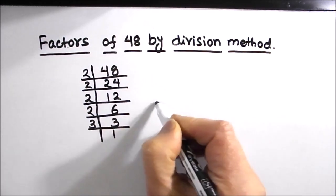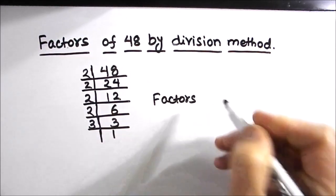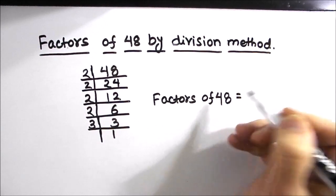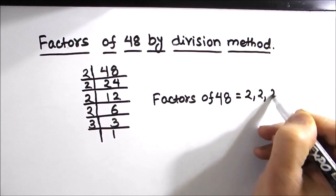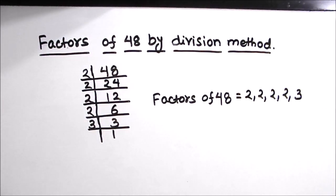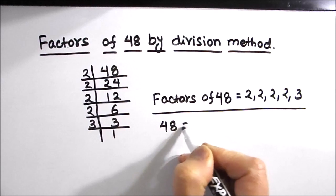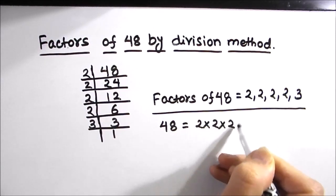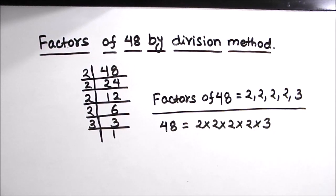So the factors of 48 will be all the numbers on the left-hand side of the ladder. The factors of 48 are 2, 2, 2, 2, and 3. We can write 48 as the product 2 × 2 × 2 × 2 × 3. These are all the prime factors of 48.